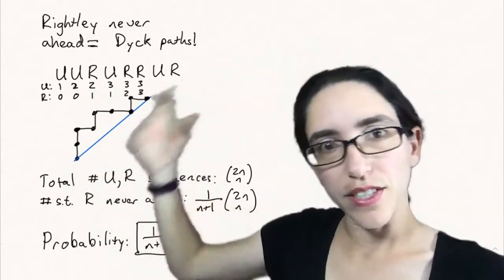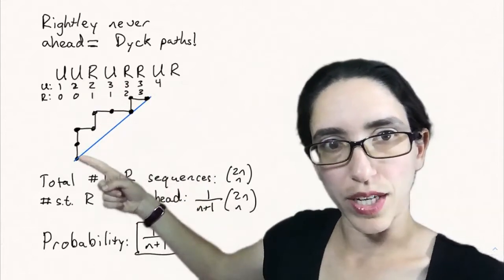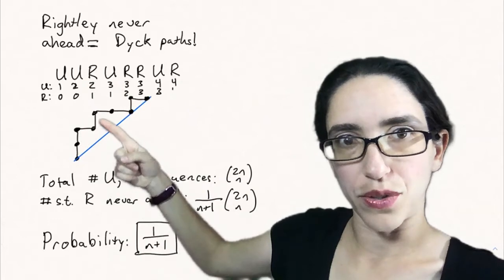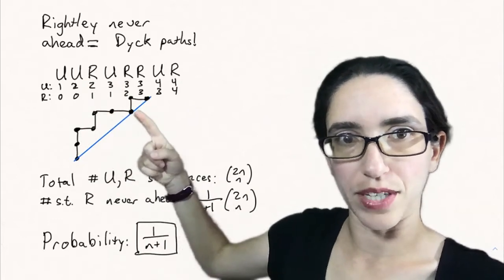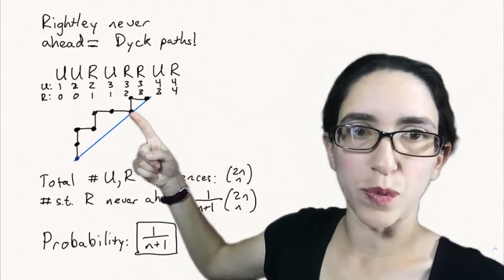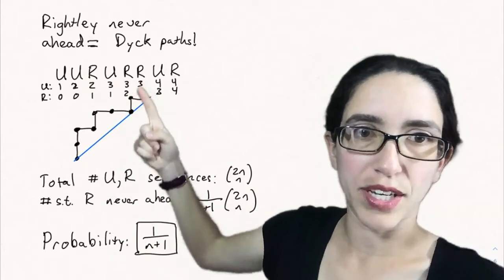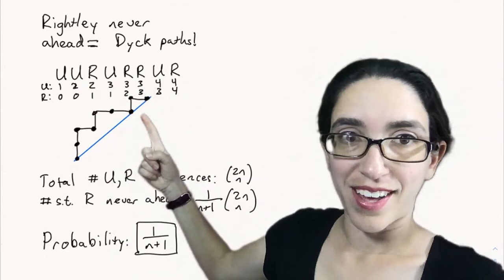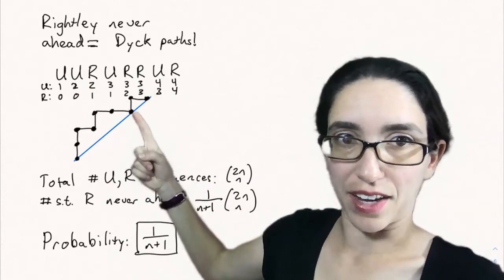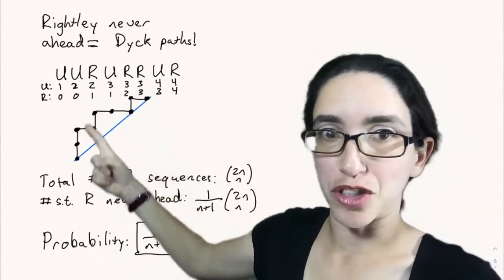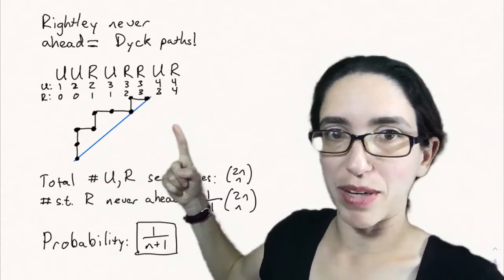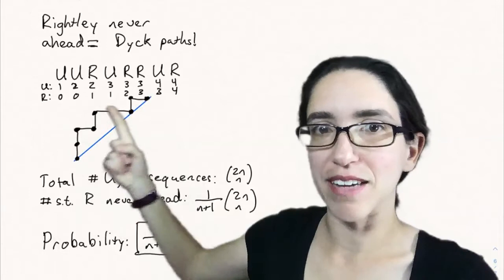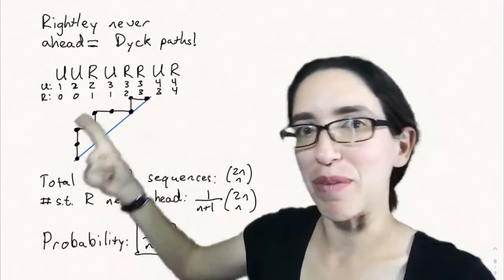This is actually giving us the coordinates of these points: (0,1), (0,2), (1,2), (1,3), (2,3), (3,3). We can see that when we're tied, three comma three, that's exactly when we're on a diagonal. Tied means on the diagonal, uppity winning means you're above the diagonal, and rightly winning means you're to the right of the diagonal. So if rightly is never winning, then that means it's a Dyck path.